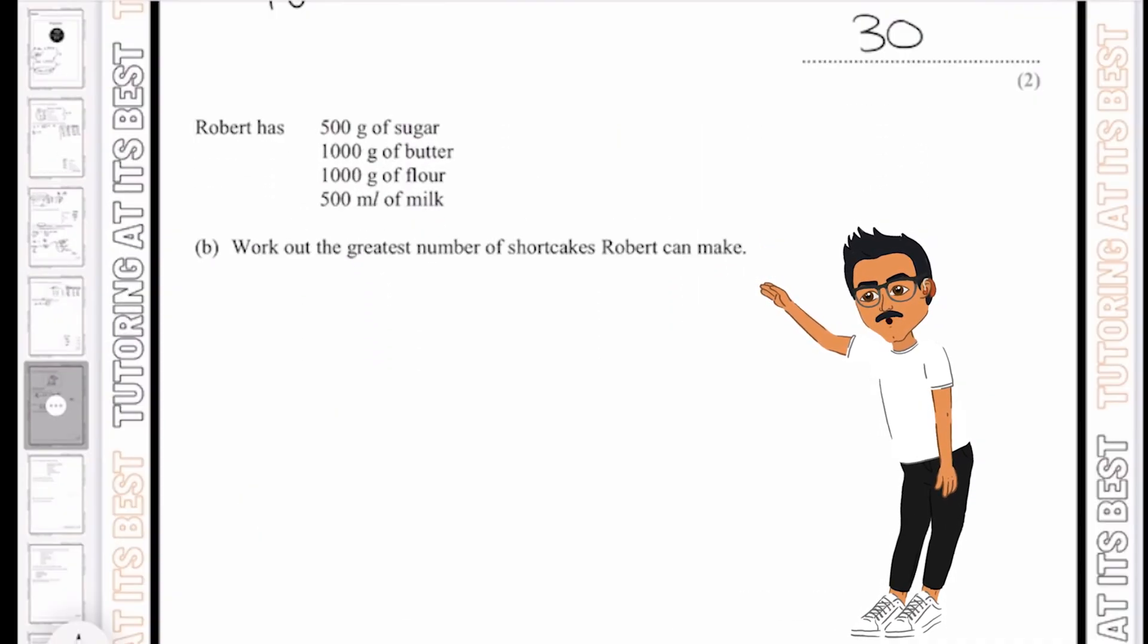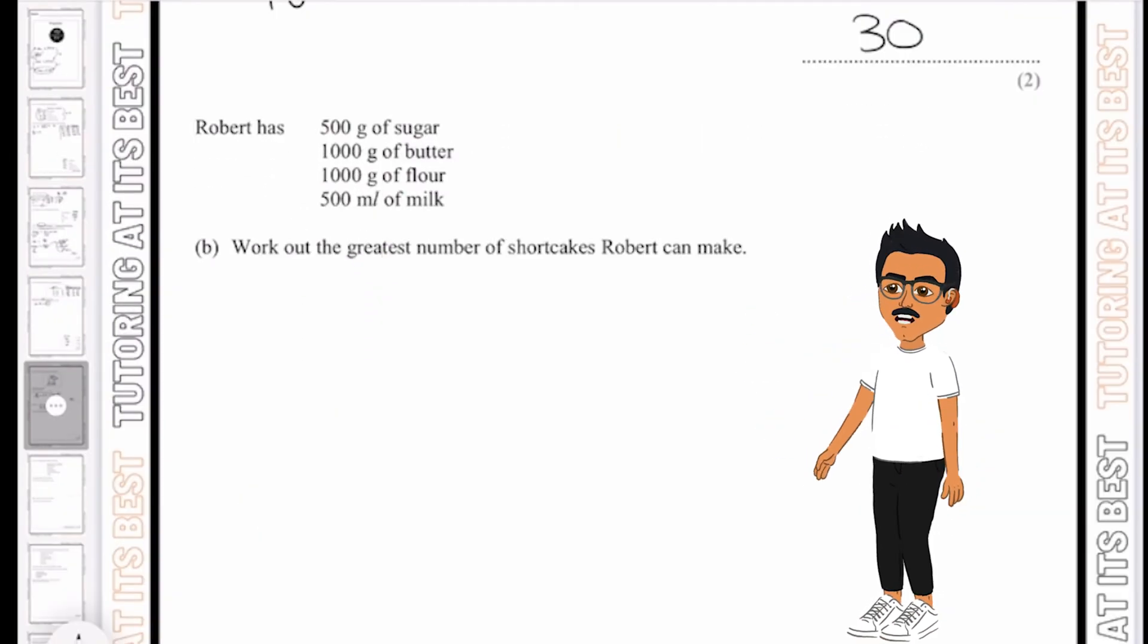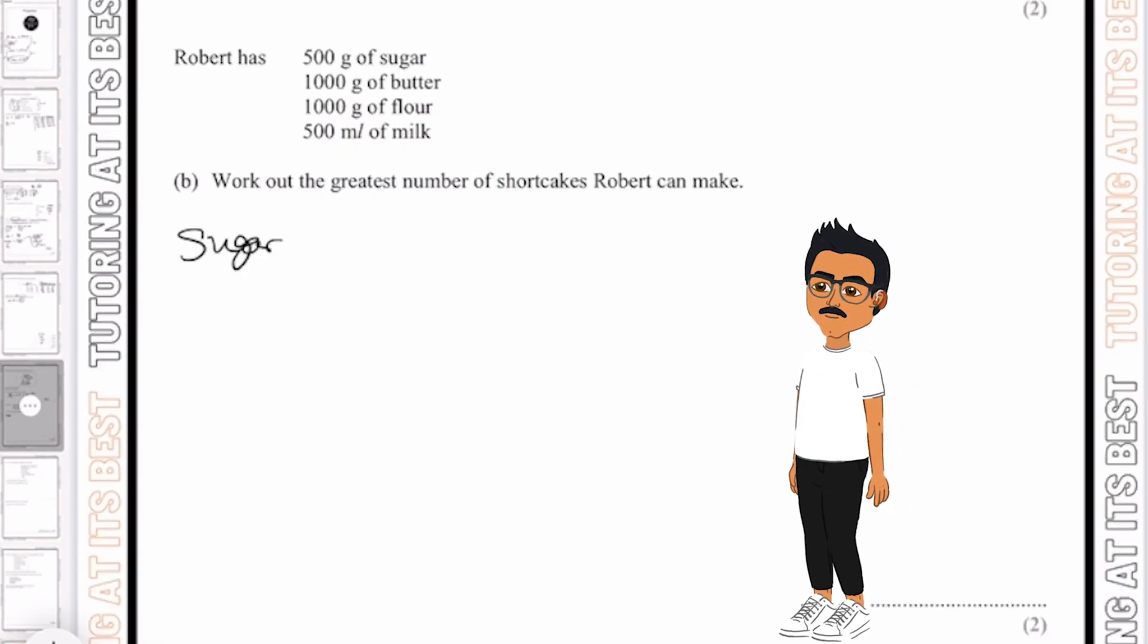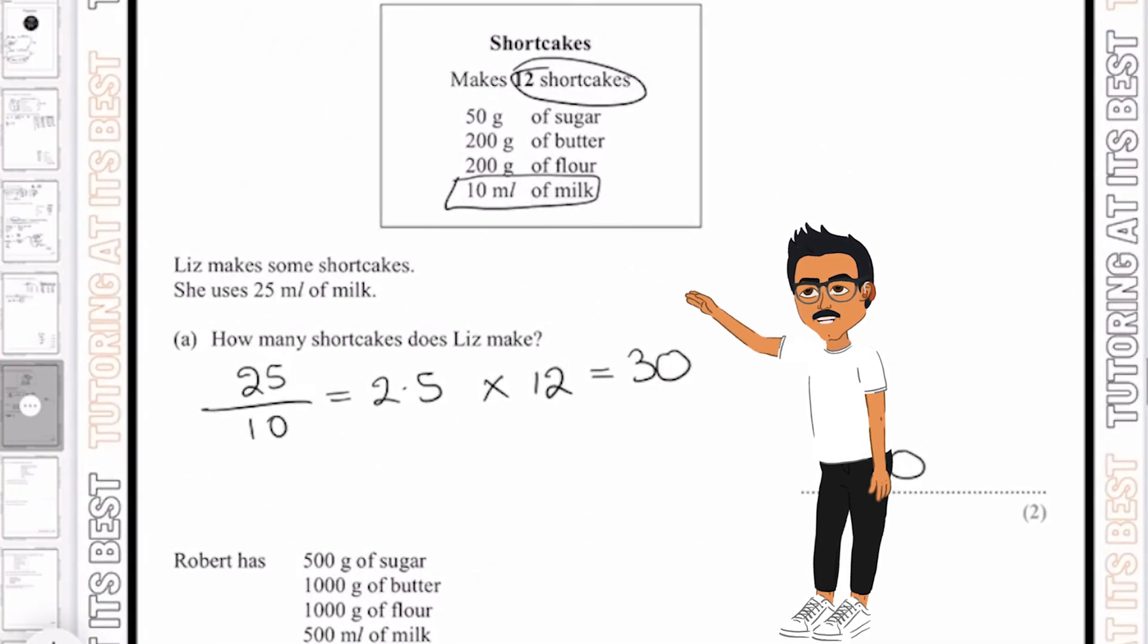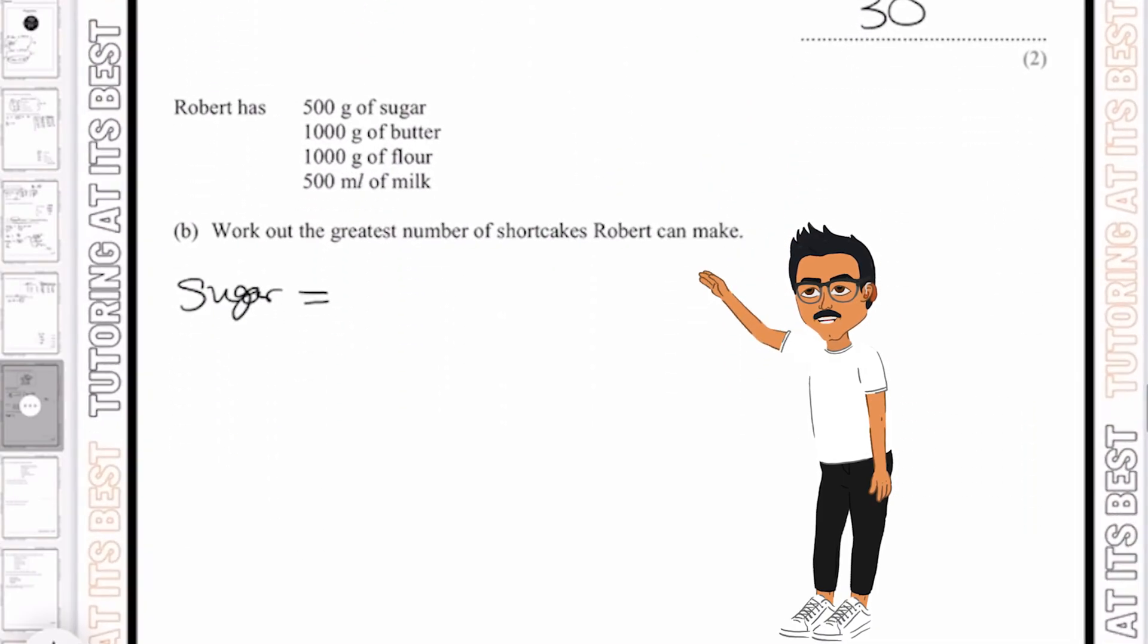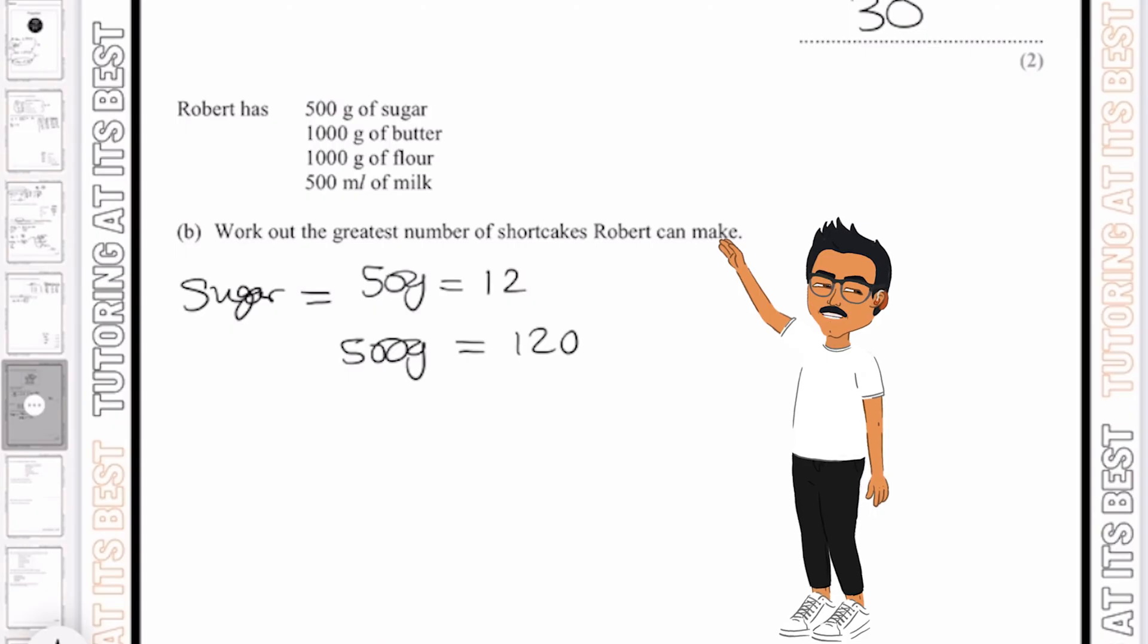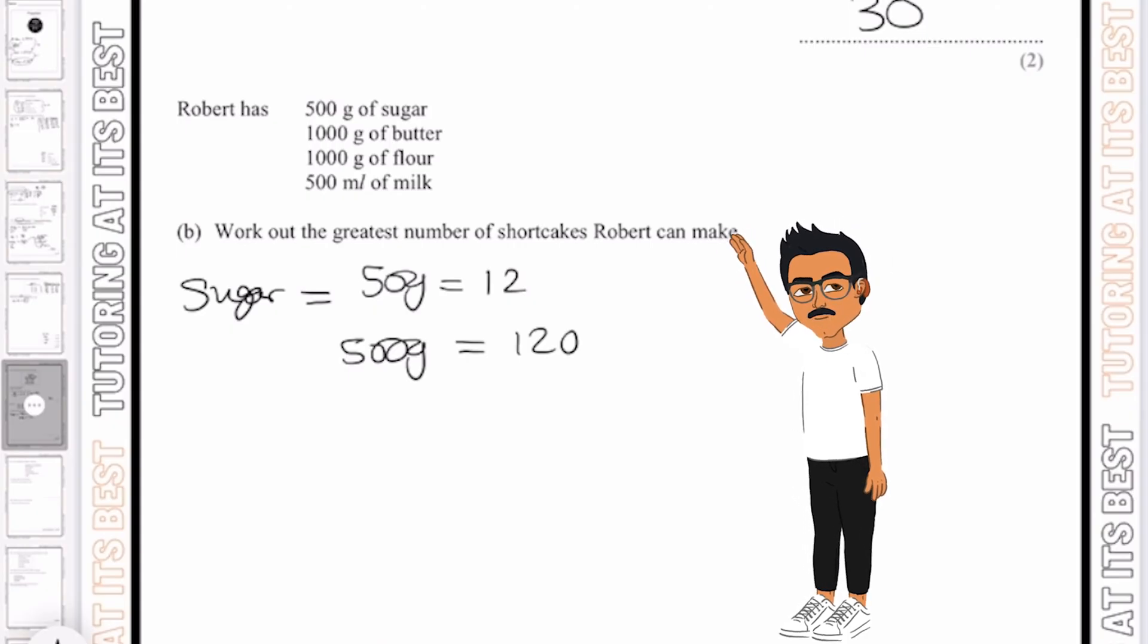And then part B. Robert has a set of ingredients and we need to work out the greatest number of shortcakes that Robert can make. So firstly, let's start with our sugar. We know that in terms of the sugar, 50 grams of sugar makes 12 shortcakes. So if 50 grams equals 12 shortcakes, then 500 grams will equal 120 shortcakes. So the way I've done this, I've just timesed both sides by 10.